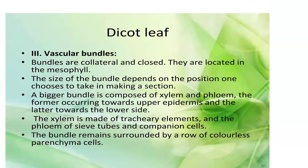Mesophyll tissue is differentiated into palisade and spongy. Palisade tissue mainly helps in photosynthesis because it contains more chloroplasts. Spongy tissue mainly helps in storage of food materials and also helps in exchange of gases between the leaf and atmosphere, due to intercellular spaces.